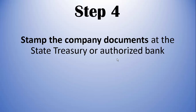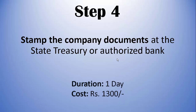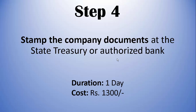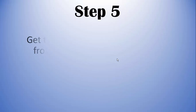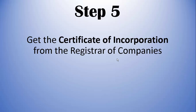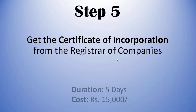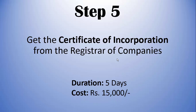Step 4: Stamp the company documents at the state treasury or authorized bank. Duration is one day and the cost involved is rupees 1,300. Step 5: Get the certificate of incorporation from the Registrar of Companies. Duration is five days and the cost involved is rupees 15,000.